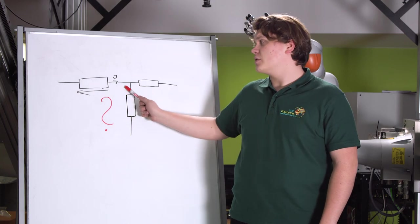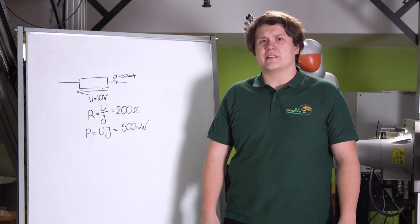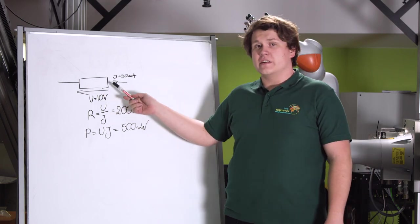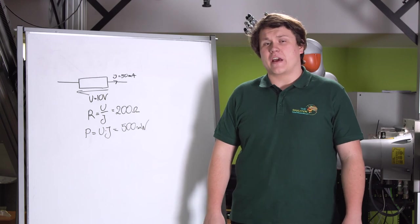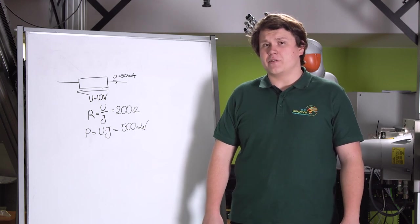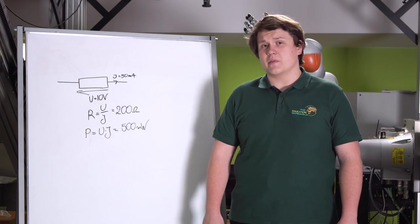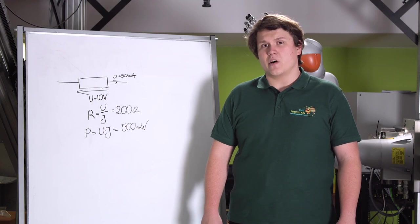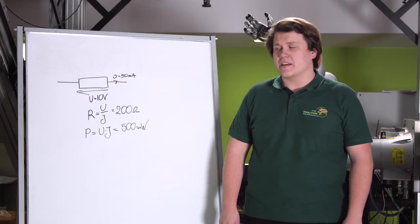Resistors limit the current flowing in a circuit, causing a voltage drop across them. Resistors are also temperature dependent — the bigger current flows through a resistor, the more it gets warmed up. So we have to choose resistors not only in terms of resistance but also in terms of maximum power. Average resistors have a maximum power of 250 milliwatts or 600 milliwatts. Therefore we should choose resistors whose maximum power is around 30% or up to twice bigger than the power we have calculated.